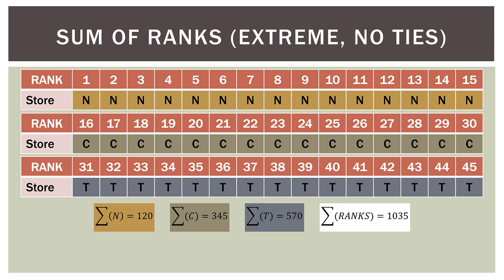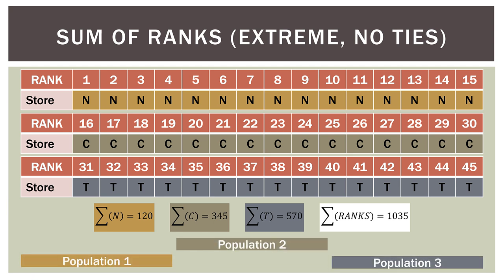So what we are doing is taking the sum of those ranks and distributing them among the stores. Visually, this would look like Nariman Point all the way to the left by itself, Churchgate in the middle all by itself, and Taj Mahal Palace to the right all by itself. Now let's take the other extreme where we alternate the ranks for each store — going 1 through 45 alternating Nariman Point, Churchgate, and Taj Mahal Palace.